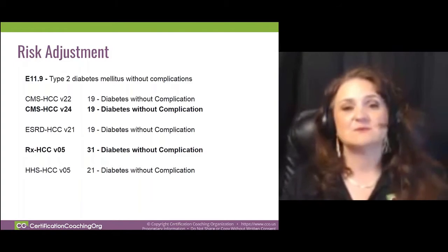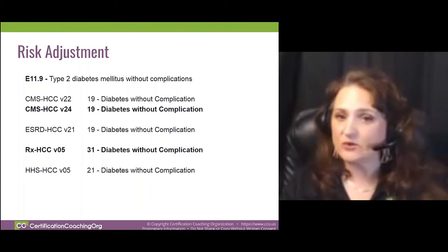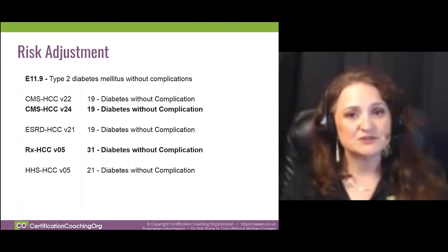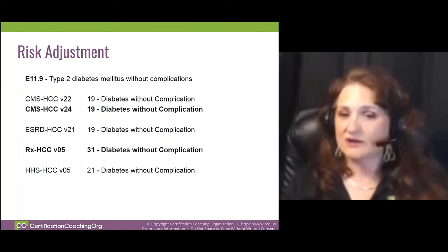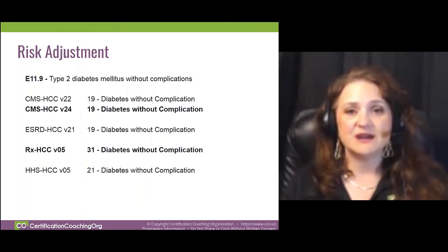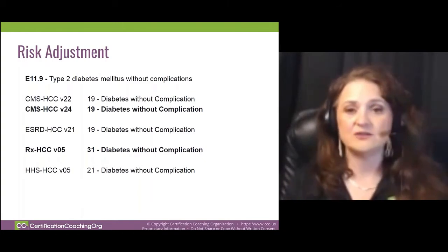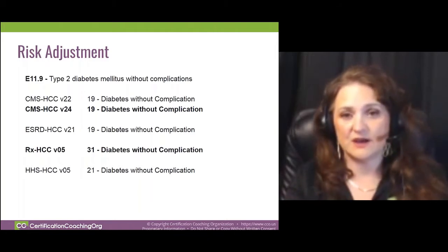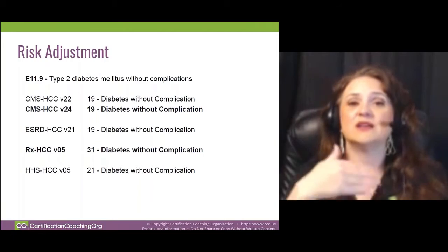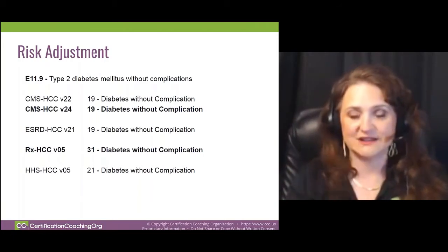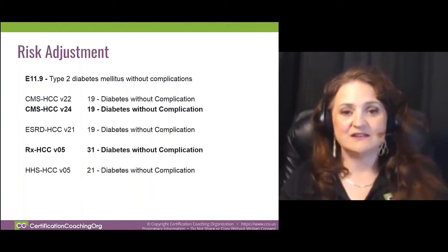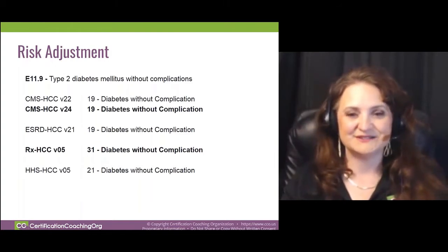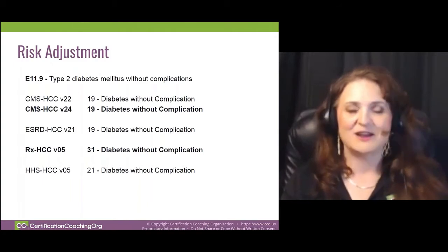Today I was reminded that we still have to know CPT codes, because we were looking at encounters through EPIC and looking at the 1500 forms. We needed to find the E&M code to confirm which encounters we abstracted the chronic conditions from. A couple of the people I was talking to had only been in risk adjustment, so they weren't familiar with CPT codes. You need to be well-rounded and know all of the codes.